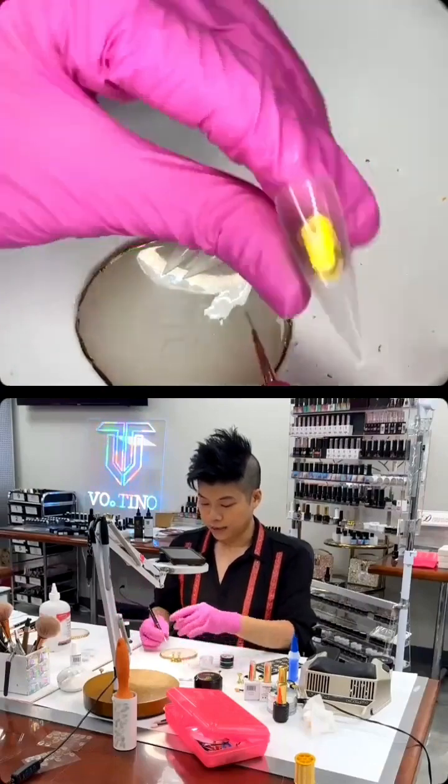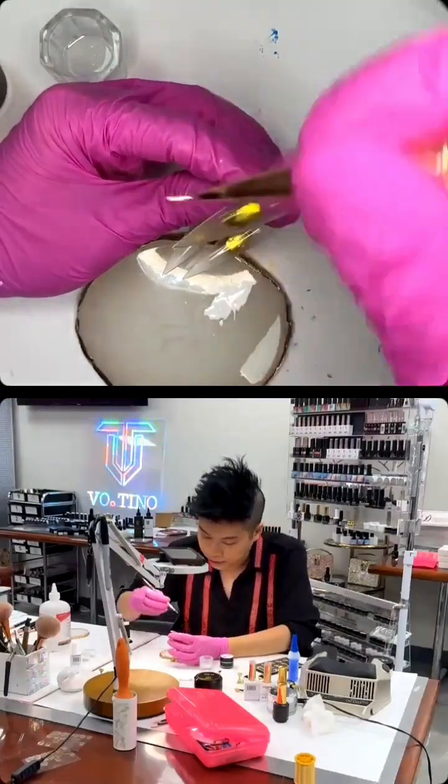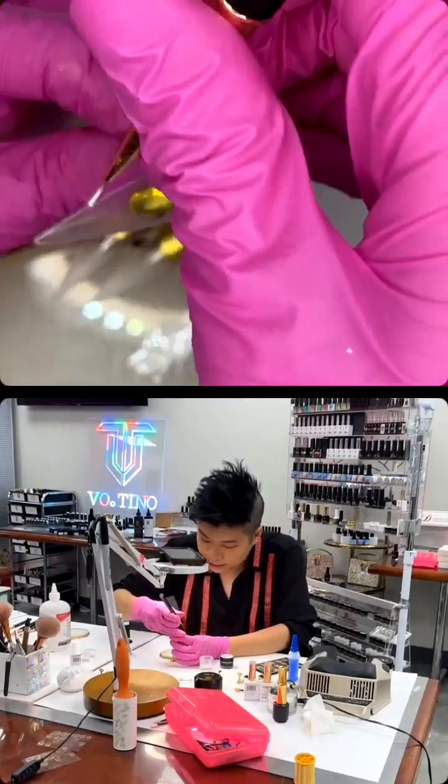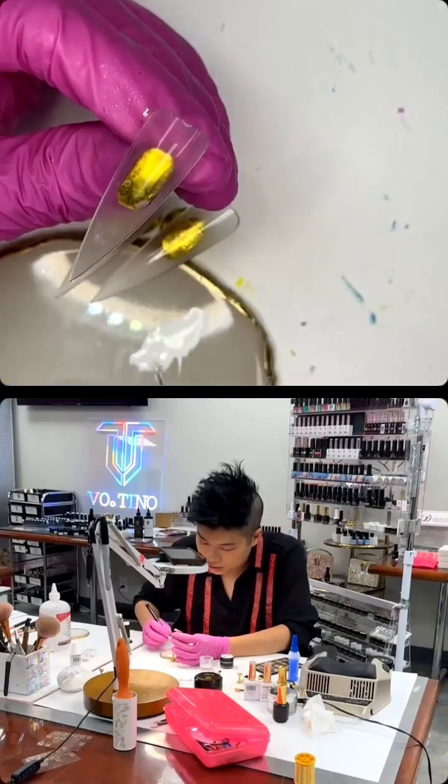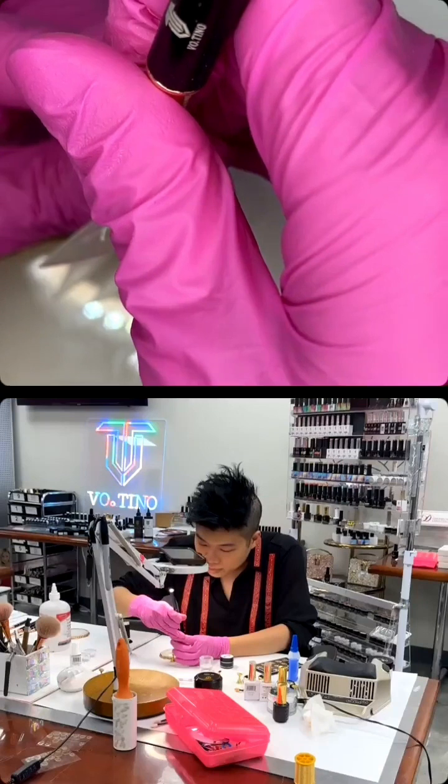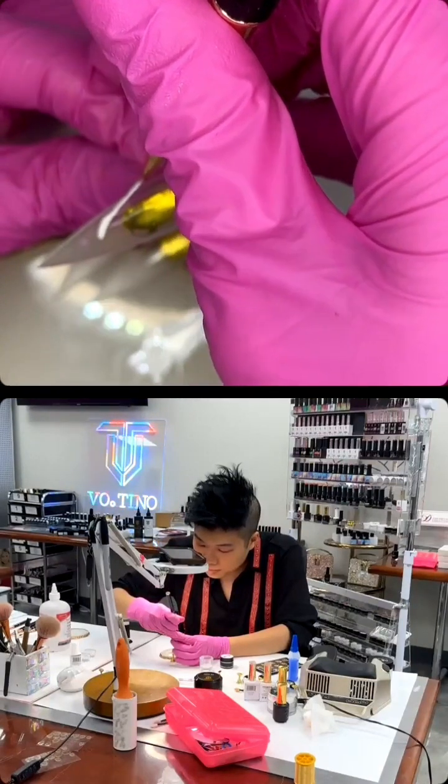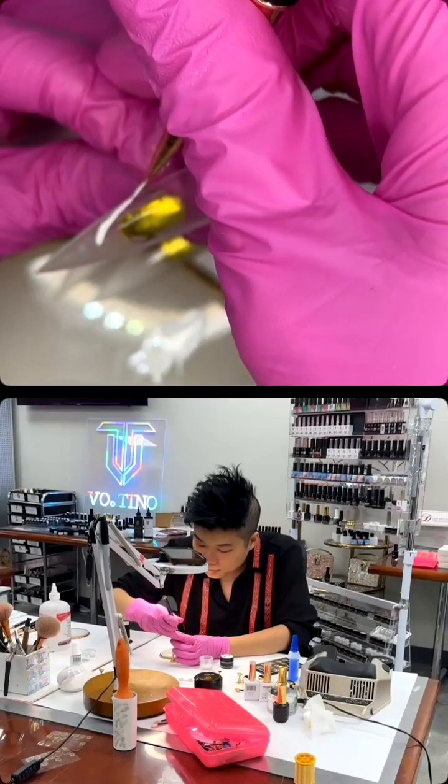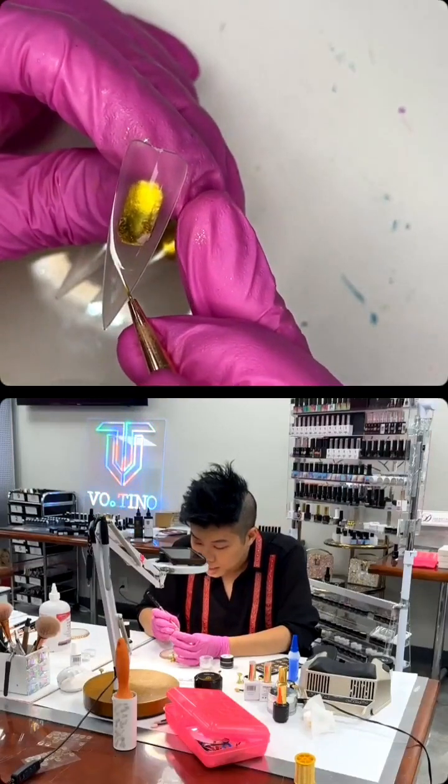So, what I do is I make a French line first. I make a frame first, start from the bottom. Oh, what's this? Some fuzz. From the bottom, I go up. And then here.